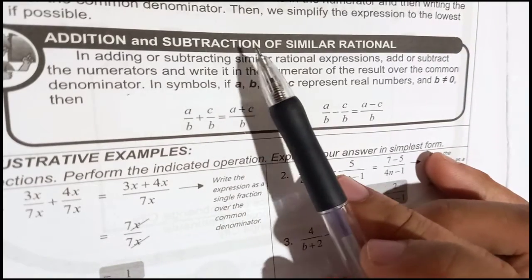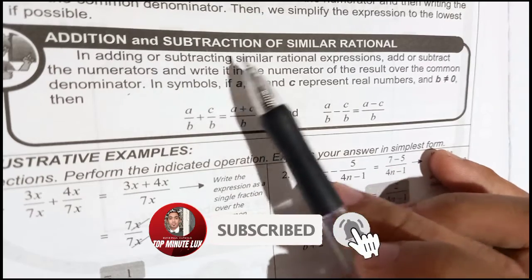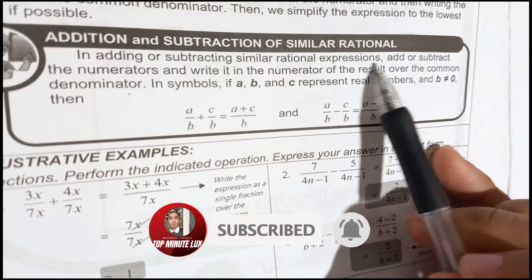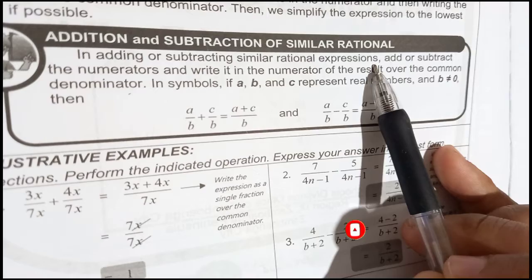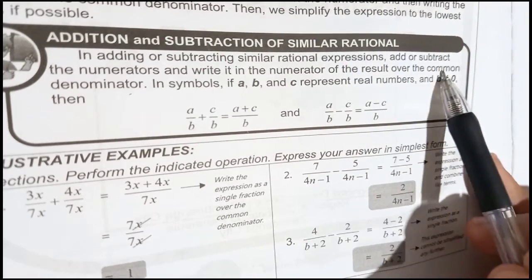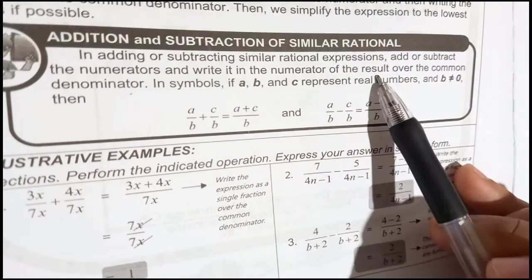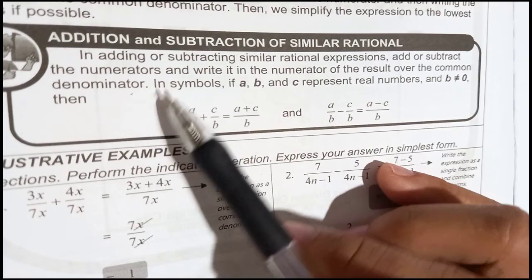Addition and subtraction of similar rational expressions. In adding or subtracting similar rational expressions, how to determine that? If it is a similar rational, just simply add or subtract the numerators and write it in the numerator of the result over the common denominator.